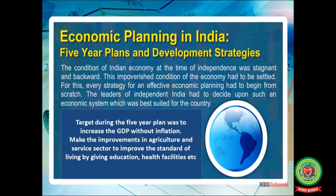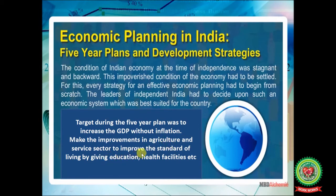The target during the five year plans was to increase economic growth with an increase in GDP — that is, gross domestic product — or the national income of the country and the per capita income, without any inflationary rise in the prices of output. The plans also aimed to make improvements in the agriculture, service, and industrial sectors to improve the standard of living by providing education, health facilities, and so on.